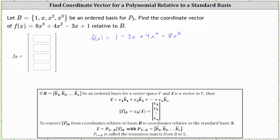And now to find the scalars c₁ through c₄, let's write f(x) again. Let's write f(x) = 1 × 1 + (-3) × x + 4 × x² + 8 × x³.